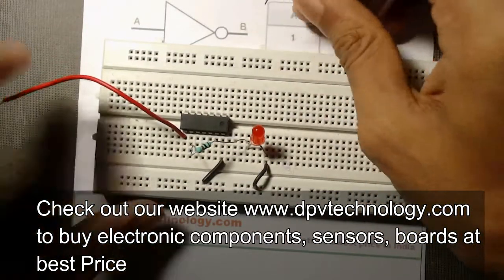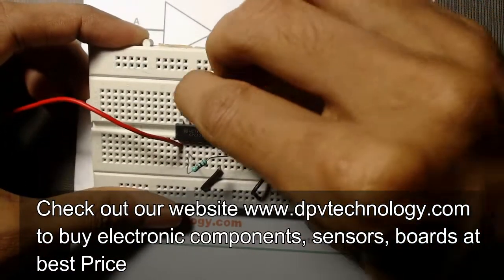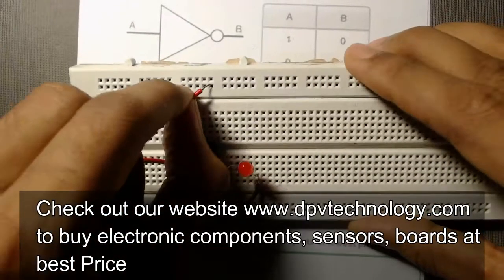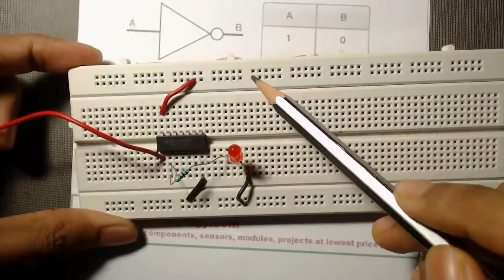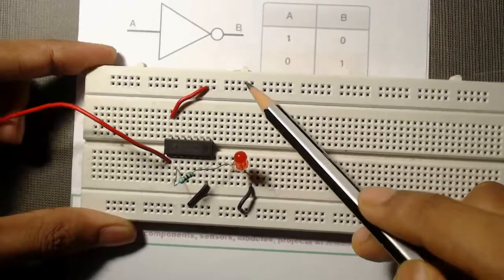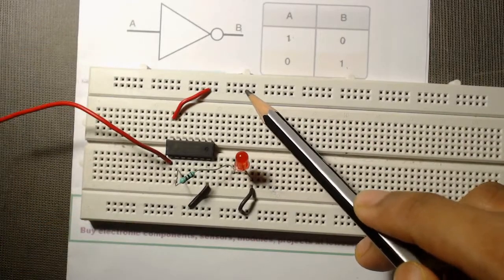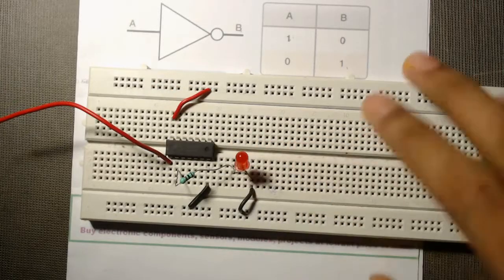And pin number 14 to VCC, this is the pin number 14. We will connect it to this row. We will connect the positive terminal of our battery to this row. Now our circuit is ready.